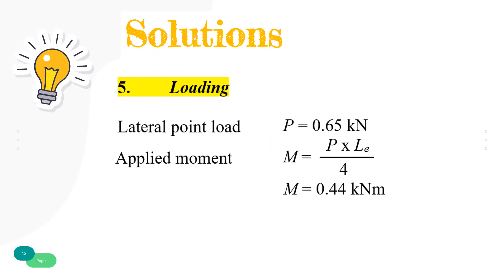Step number 5. Lateral point load of 0.65 kN is given by the question. Applied moment needs to be calculated. Knowing that the applied moment is load multiplied by effective length and divided by 4. Hence, applied moment is 0.44 kNm.